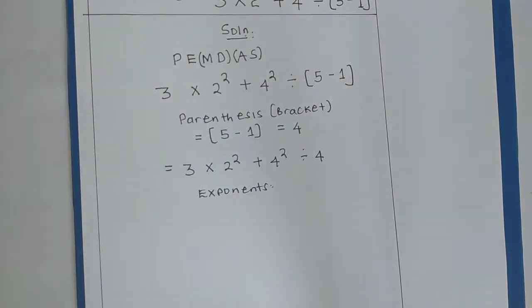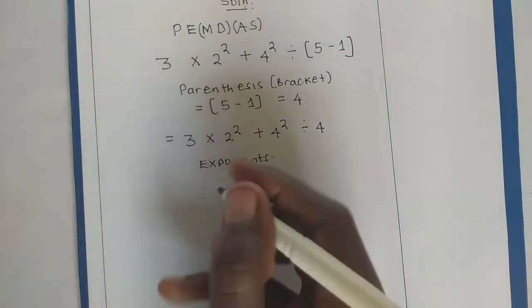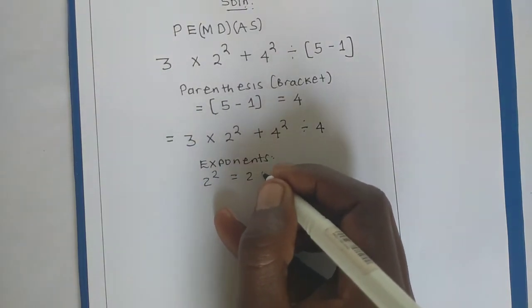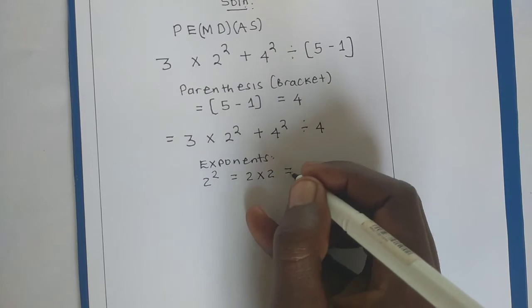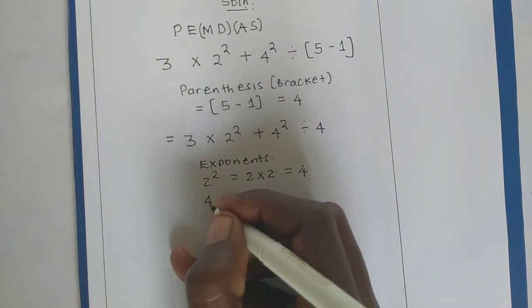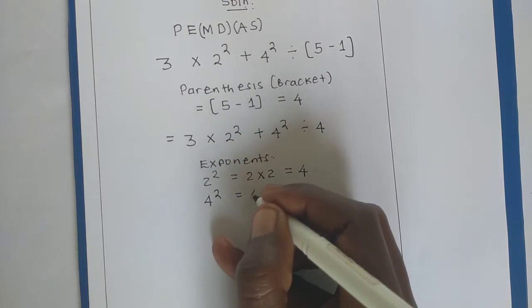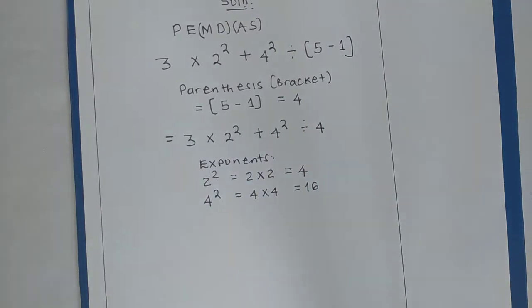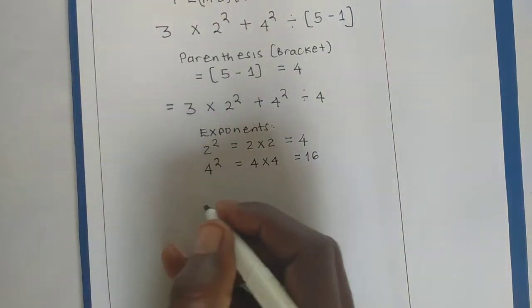Now, we have the powers, so let's deal with the powers. We know that 2 to the power of 2 will give us 2 times 2, resulting into 4. Also, 4 squared is like 4 times 4. We shall get 16. So, now, let's substitute.